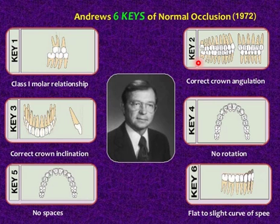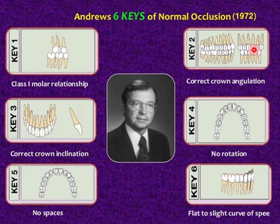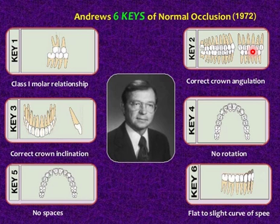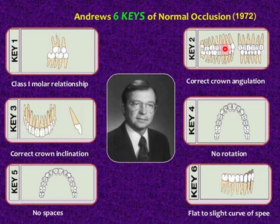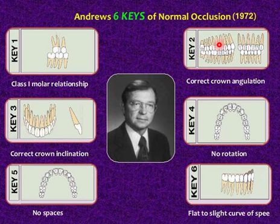Key number two is crown angulation. Angulation refers to the long axis of the crown, not to the long axis of the entire tooth. The gingival portion of each crown's long axis was distal to the incisal portion, varying with individuals and tooth type. The long axis of the crown of all teeth except the molars is identified as the middle portion of the labial or facial surface — the most prominent and center-most vertical portion of the labial or buccal surface.